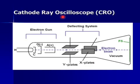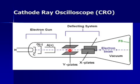The cathode ray oscilloscope, or CRO, has three important parts. The first is called the electron gun, which consists of a cathode and anode combined to produce an electron beam. The second is the deflecting system, which consists of two pairs of plates — one pair to deflect the beam up and down, and another pair to deflect the beam sideways. The third is the fluorescent screen, which displays the electron beam as a dot.